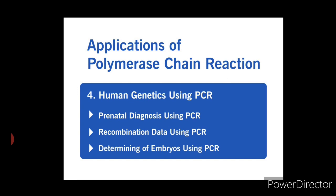First, prenatal diagnosis using PCR. Prenatal diagnosis of sickle cell anemia recorded the first application of PCR in human genetics. PCR takes less than a day, in contrast to several weeks needed when Southern blots are utilized for hybridization with a probe. The test has also been used for diagnosis of phenylketonuria, beta thalassemia, hemophilia, etc.